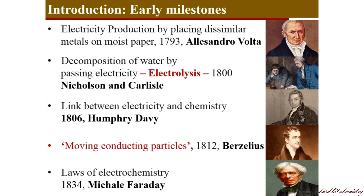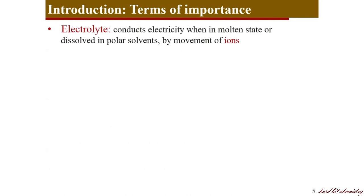Now with that background, we will move on to the very important terms needed for further discussions. The first one is electrolyte — the conducting solution. It conducts electricity in molten state or in aqueous solution by the movement of particles called ions.